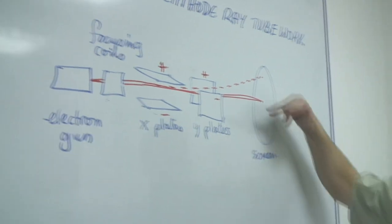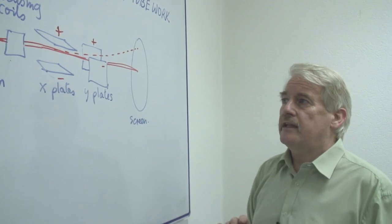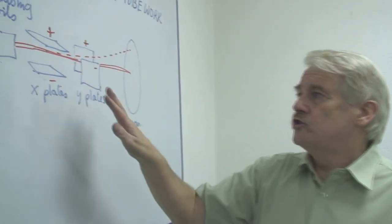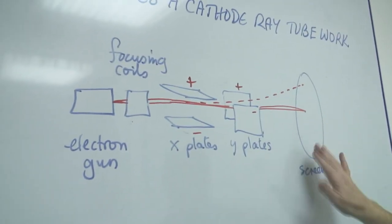So you can cover the whole of the screen just by adjusting the voltage on these two sets of plates. Now the important thing is when you are actually doing this to ensure that you get a clear coverage of the plates.